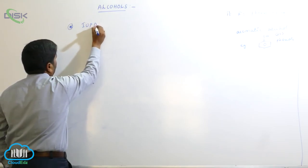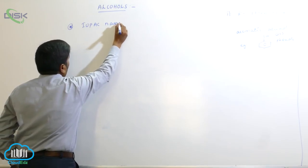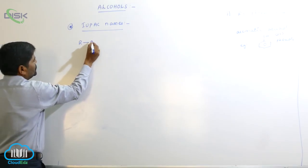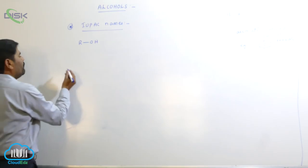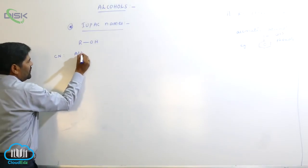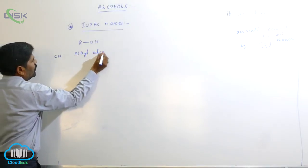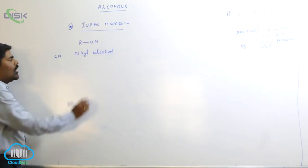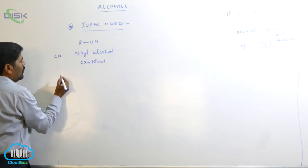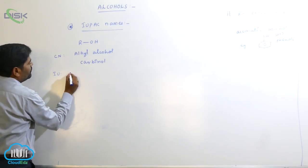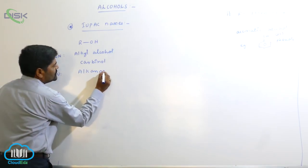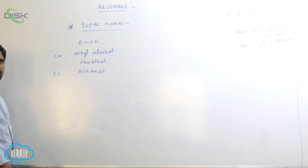Nomenclature of alcohols: The IUPAC name uses R-OH as the general functional group. The common name is alkyl alcohol, also called carbinol. In IUPAC naming, the root word indicates the carbon chain, 'an' indicates a saturated system, and 'ol' is the suffix for the hydroxyl functional group.